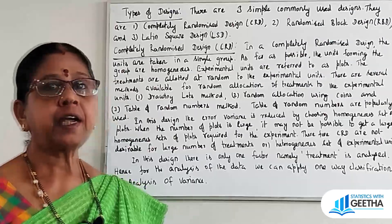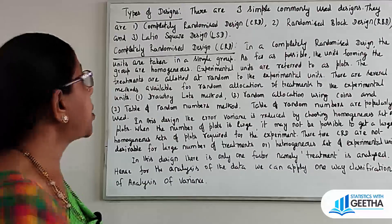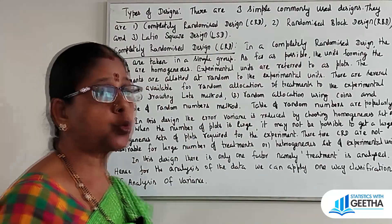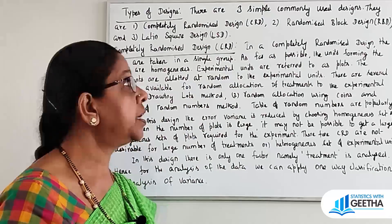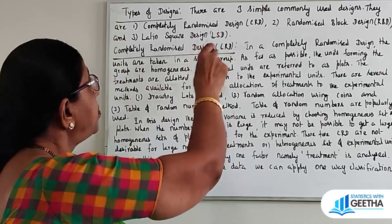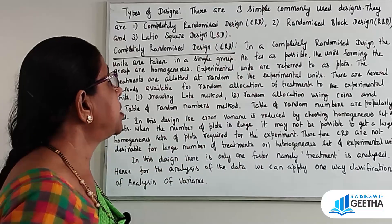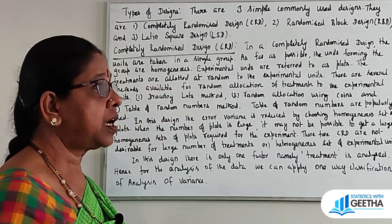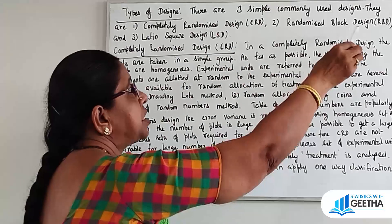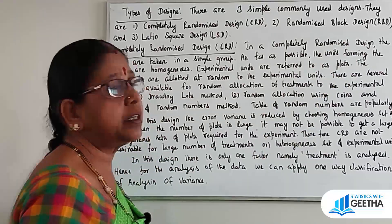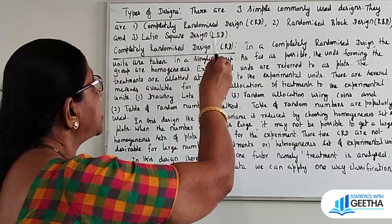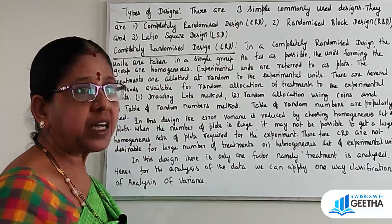There are three simple commonly used designs. They are: Completely Randomized Design (CRD), which is the simplest; Randomized Block Design (RBD); and Latin Square Design (LSD).